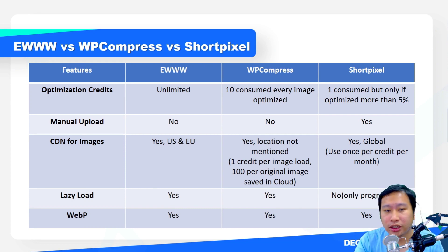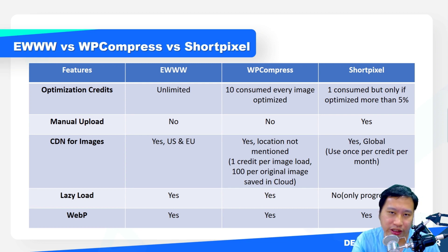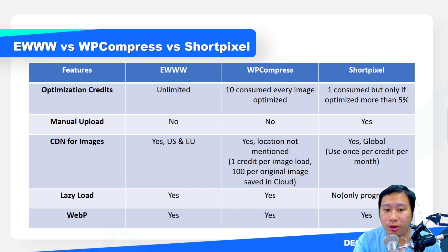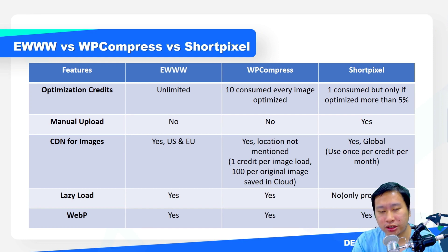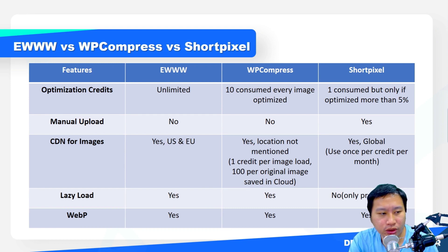Next is Short Pixel. Short Pixel only consumes a credit if it's able to compress more than 5% of the image, so every time it compresses an image it eats up one credit.